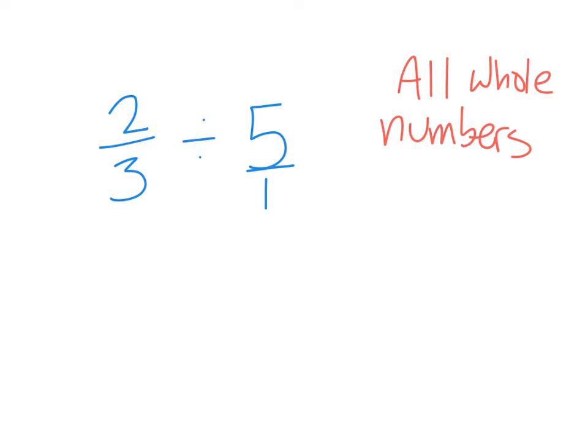All right. Now let me show you what it looks like when you're dividing with a whole number. So what if I have two-thirds divided by five. Okay? Well, first, this five is a whole number. All whole numbers are over one. All whole numbers are over an imaginary one.